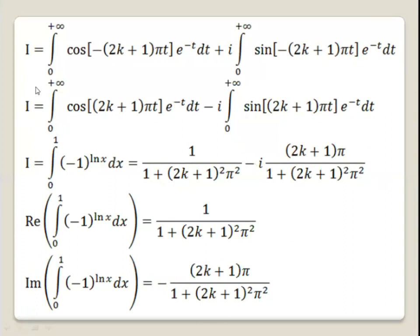So now we have I equals 1 over (1 plus (2k+1)² pi²) minus i times (2k+1) pi over (1 plus (2k+1)² pi²). Therefore this is the answer for the integral I equals the integral from 0 to 1 of minus 1 to the power ln x dx. The real part of I is 1 over (1 plus (2k+1)² pi²), and the imaginary part of I is minus (2k+1) pi over (1 plus (2k+1)² pi²).